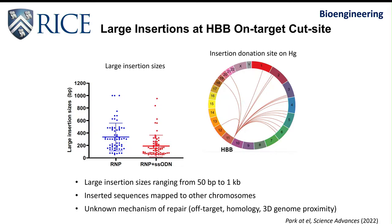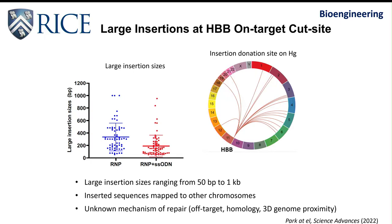For large insertions, we identified sizes ranging from 50 base pairs up to 1 kilobase pair. Most inserted sequences map around the CRISPR cut site near HBB, showing complex local rearrangement. The rest of the sequences map to other chromosomes in the human genome. We could not find apparent sequence homology between HBB and the inserted sequences, so we suspect the insertions may be due to proximity of the insertion-donating site and HBB at the time of double-strand repair in terms of the 3D genome context.